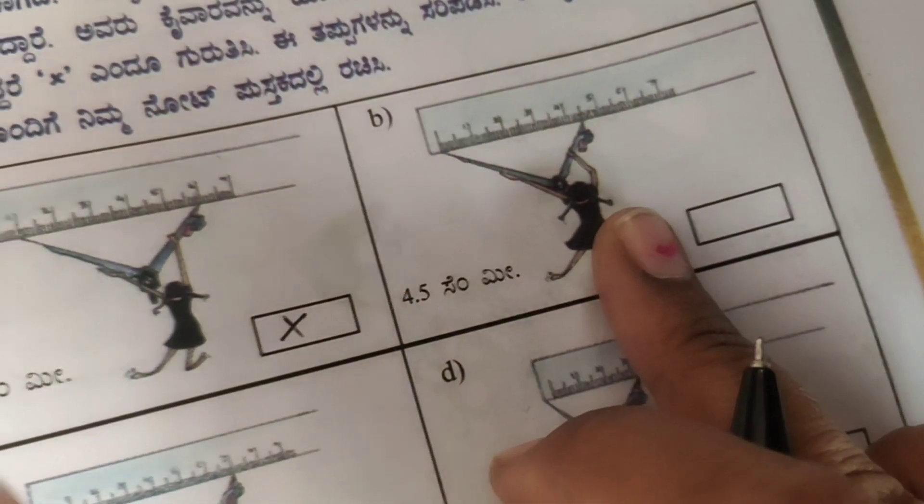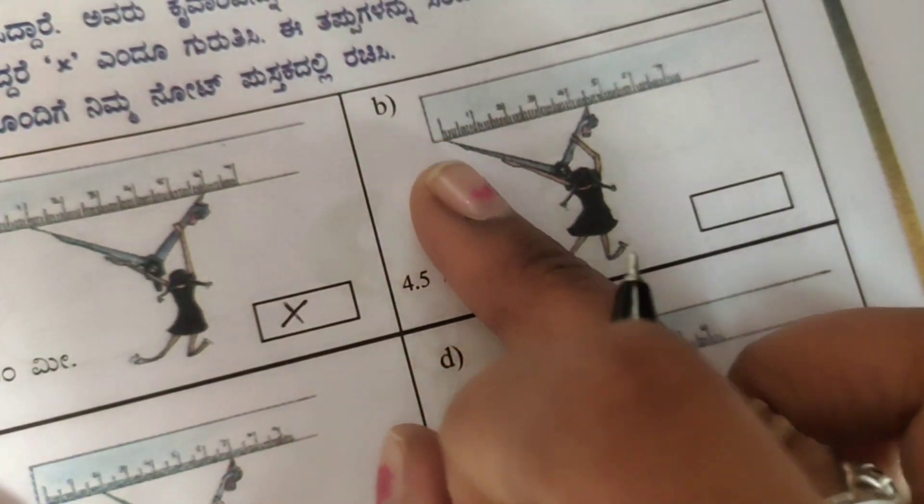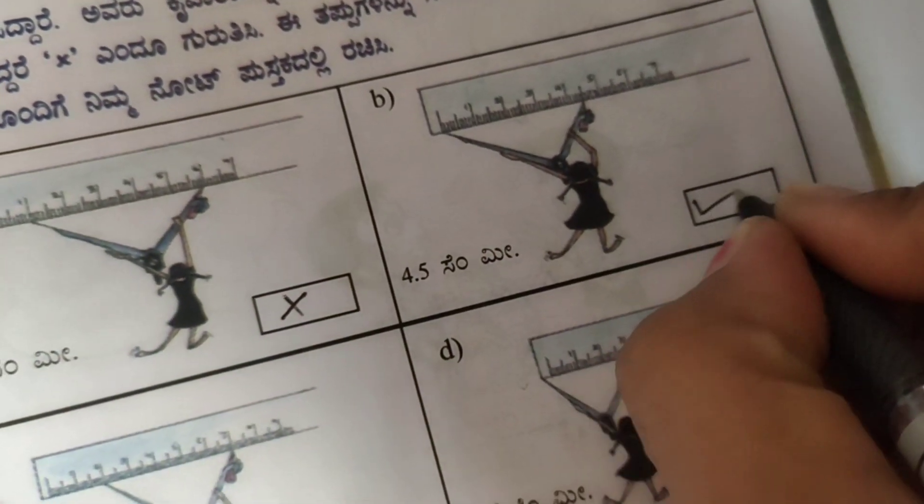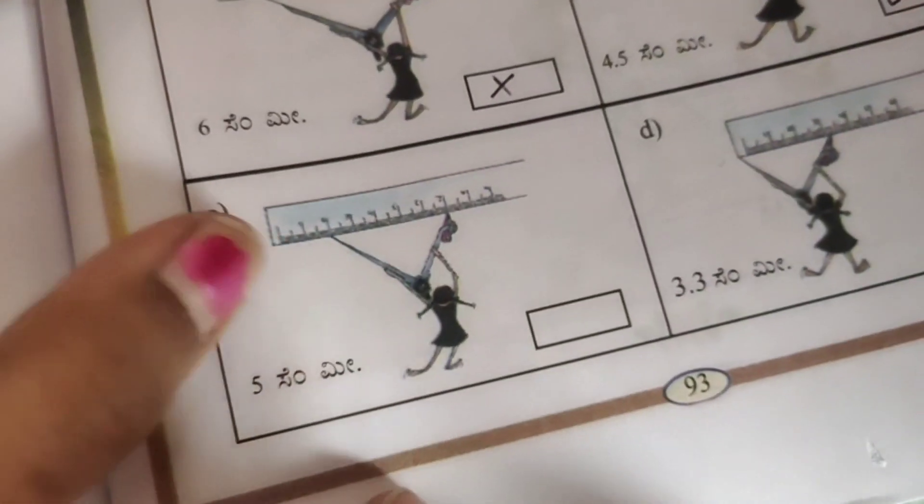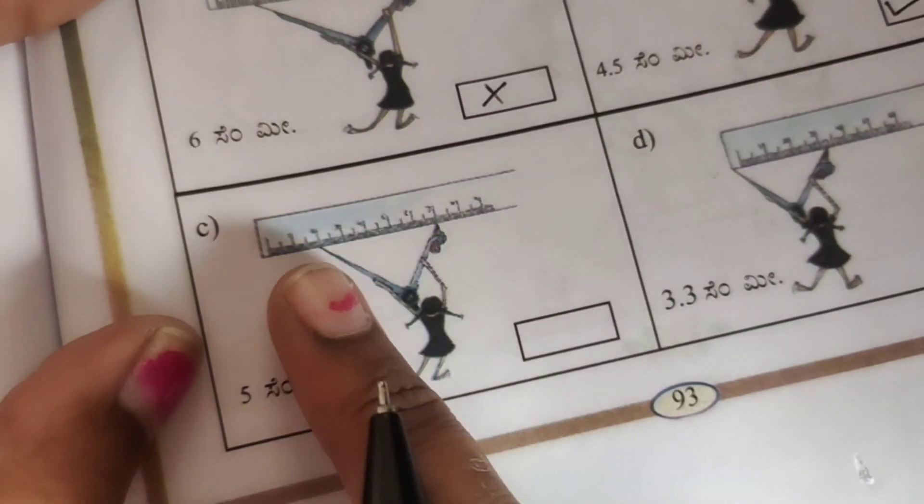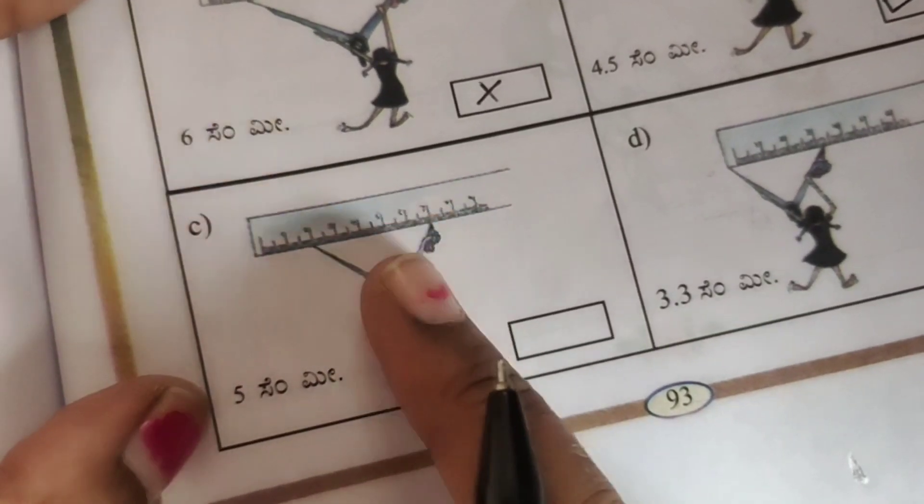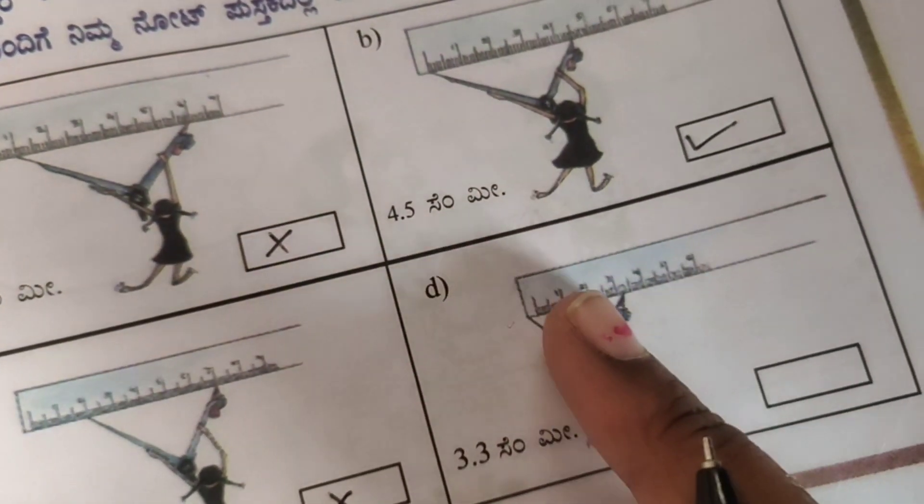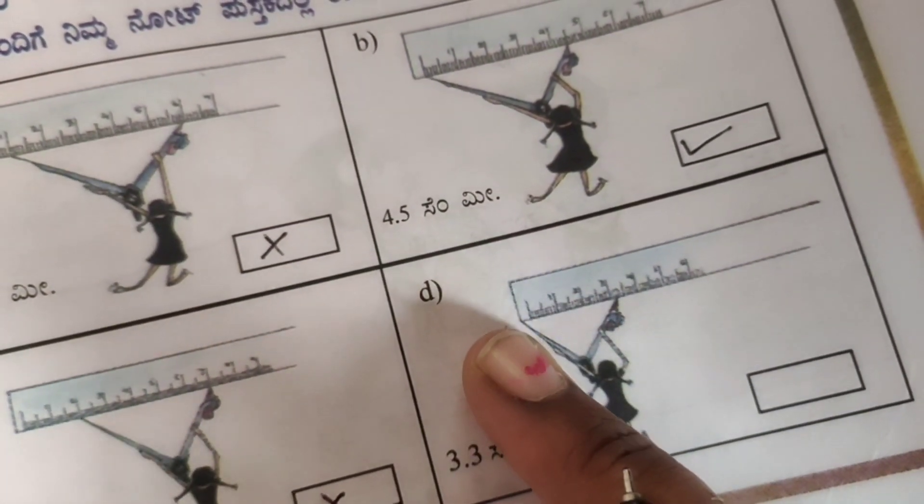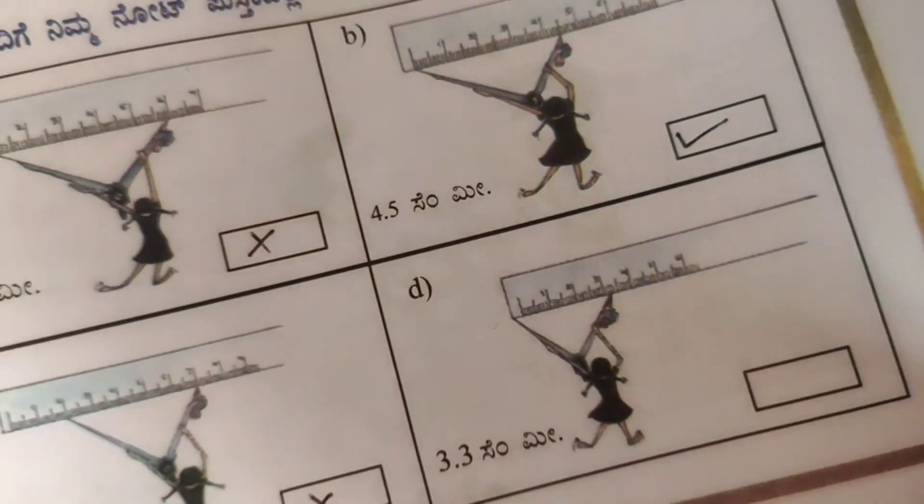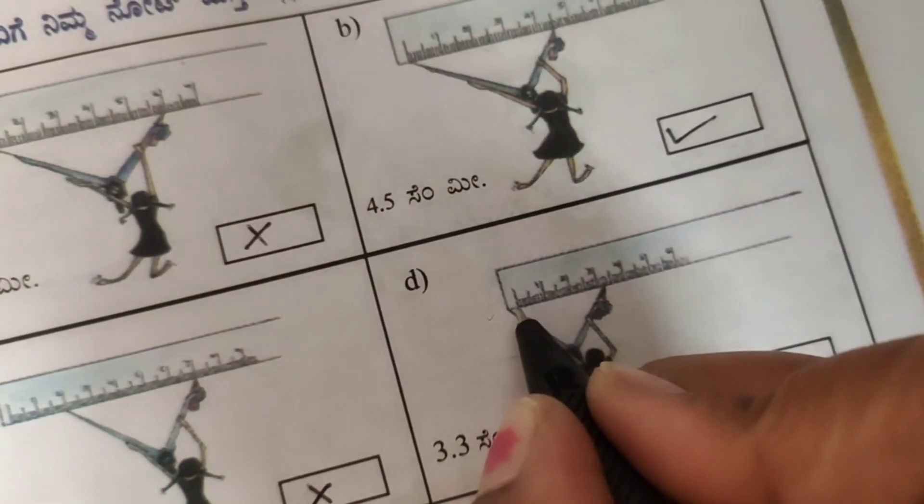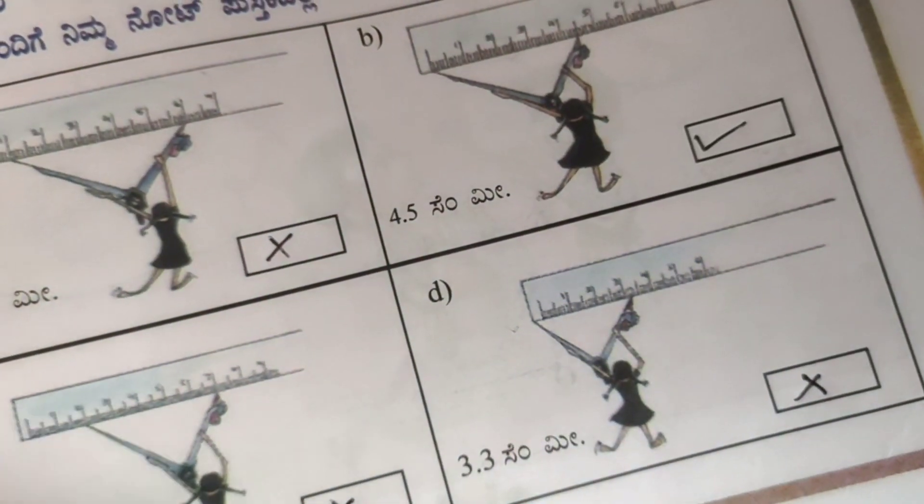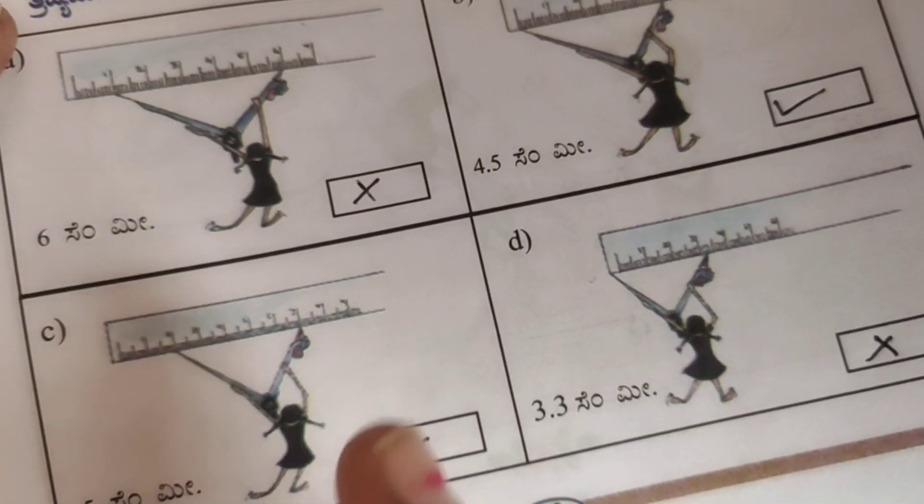The students in the following figures have to draw circles with the given radii. The students have placed the compasses on the scale as shown. If they have placed the compasses correctly, put right mark, if not put wrong. The first one is wrong. Second one, you start from zero and measure 4.5 centimeter, so this is correct. Next, C, 5 centimeter but you are at 3 centimeter, so this is wrong. Fourth one, you are at 0 but at the scale end, so this is wrong.